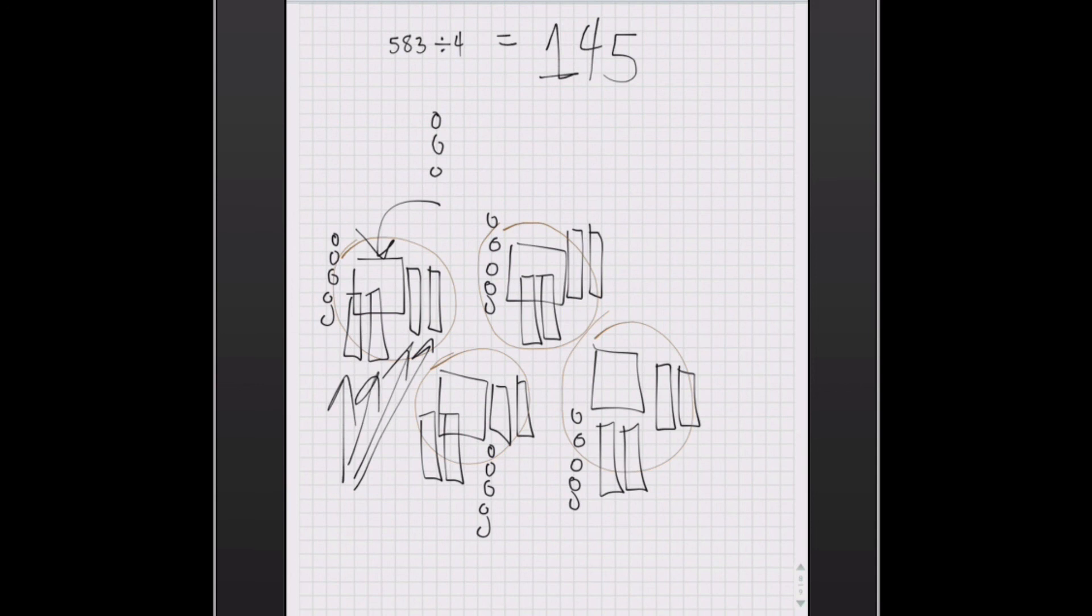And then we have five left over. So 145. And then we've got this with a remainder of three left over. And so that's how we might sort and get this answer using the model, by the sorting technique.